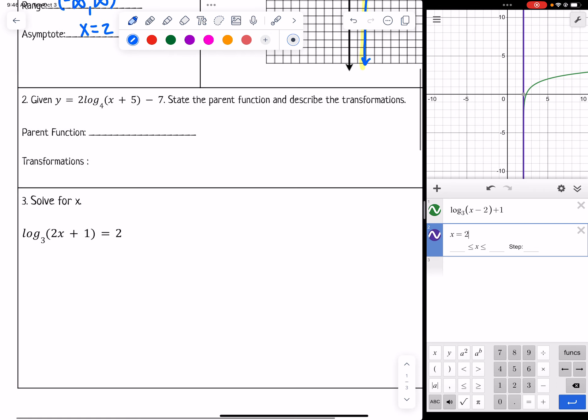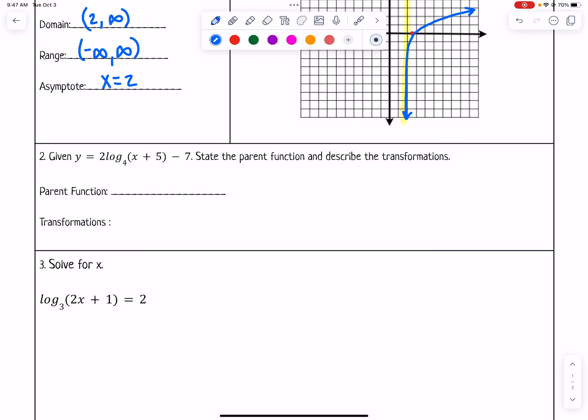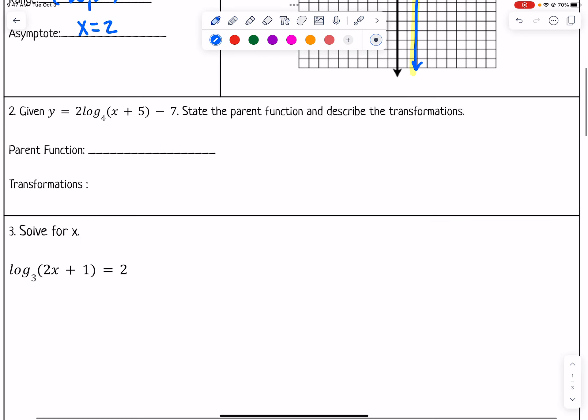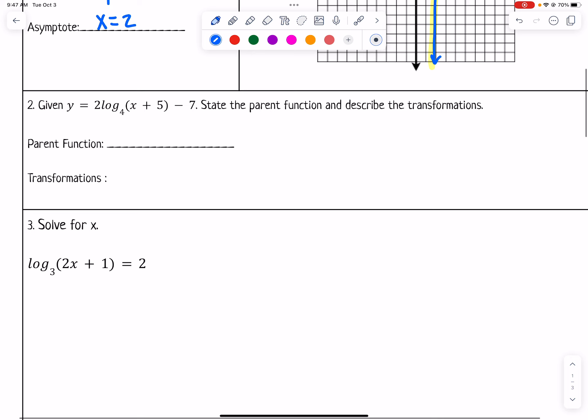Number 2 says given y = 2log₄(x + 5) - 7, state the parent function and describe the transformations. The parent function would just be y = log₄(x). You do want to put the base and then just the x.